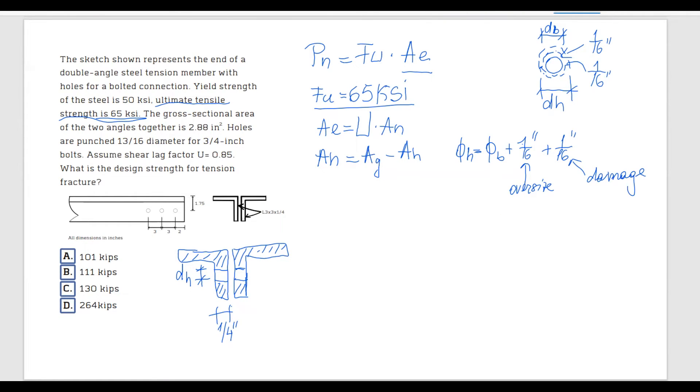In our problem we are giving the hole diameter and the bolt diameter. And this is the nominal hole diameter. We have to add another 1 over 16 to this. So the diameter of the hole in our case is going to be equal to diameter of the bolt plus 1 over 16 plus 1 over 16 equals 1 over 16. And this equals to 0.875 inches.